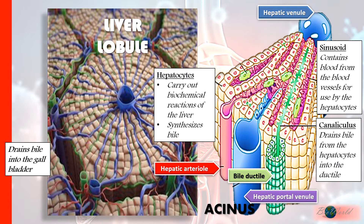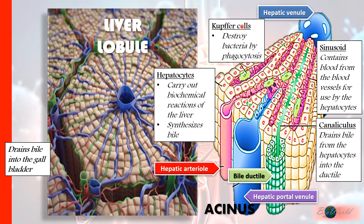We also have a passage leading to the bile ductile called the canaliculus. The canaliculus drains the bile from the hepatocytes that are synthesizing bile and directs it into the bile ductile, which then transports it into the gallbladder. Inside the sinusoid, there are also some amoeba-like cells called the Kupffer cells. The function of the Kupffer cells is to destroy any bacteria that infects the liver by phagocytosis.